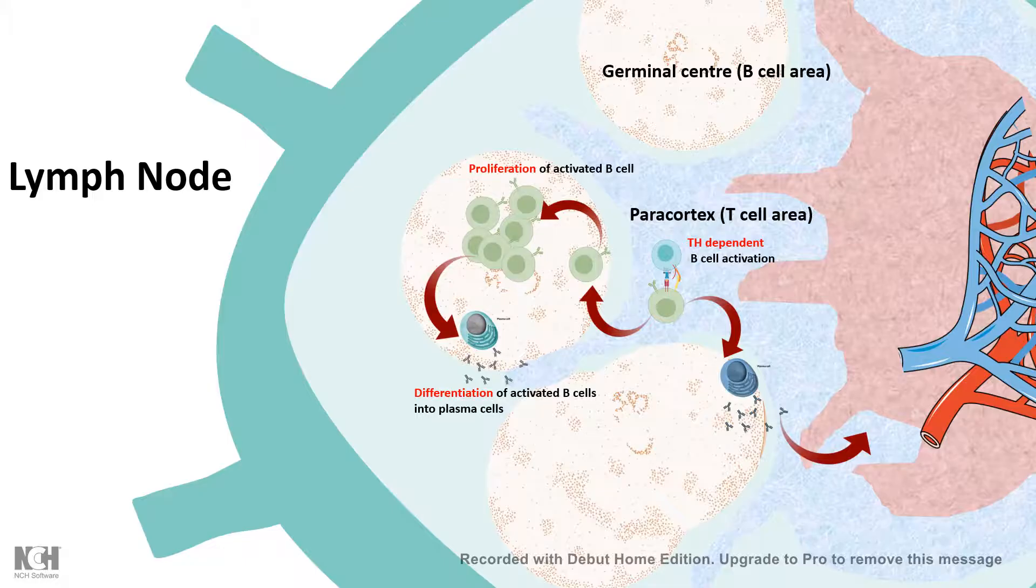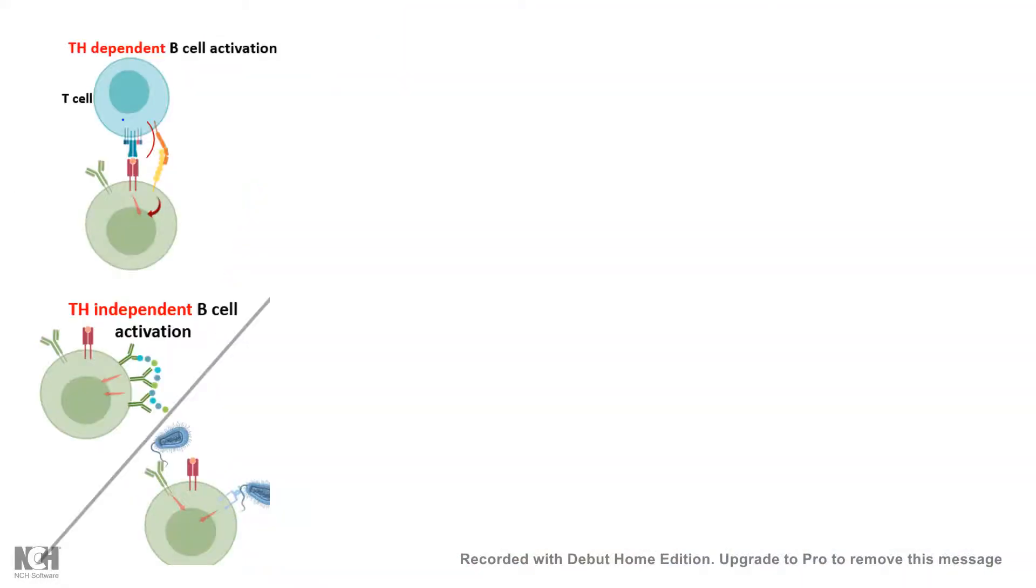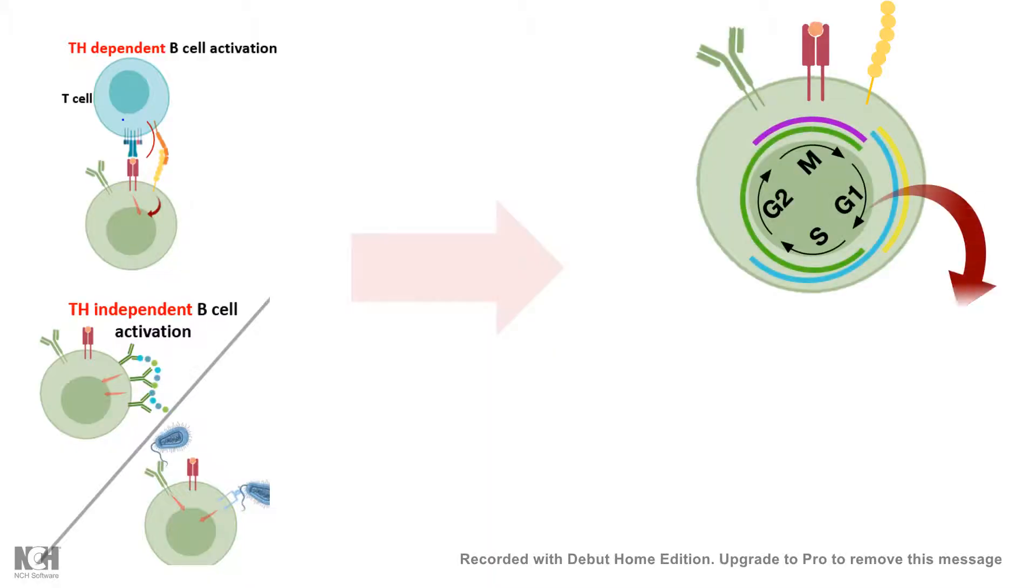They can also die or they can become a memory cell. Most of the cells which are activated by the T helper cell or independent of T helper cell would undergo cell cycle and thereby they would divide and grow in number.